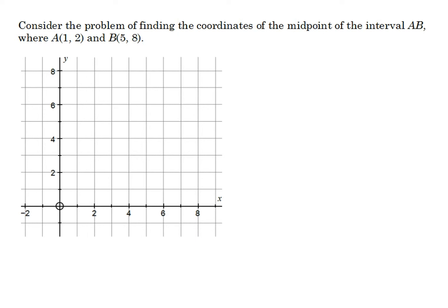Let's mark the points A and B on the grid shown here. So B is at (5, 8). We're looking at finding the midpoint of this interval — halfway between A and B. It will obviously be on this line. Because we've got quite simple numbers and a grid drawn, we can see that the midpoint is at this point here: (3, 5). So we want to think about how we could actually work out that the midpoint is at (3, 5).